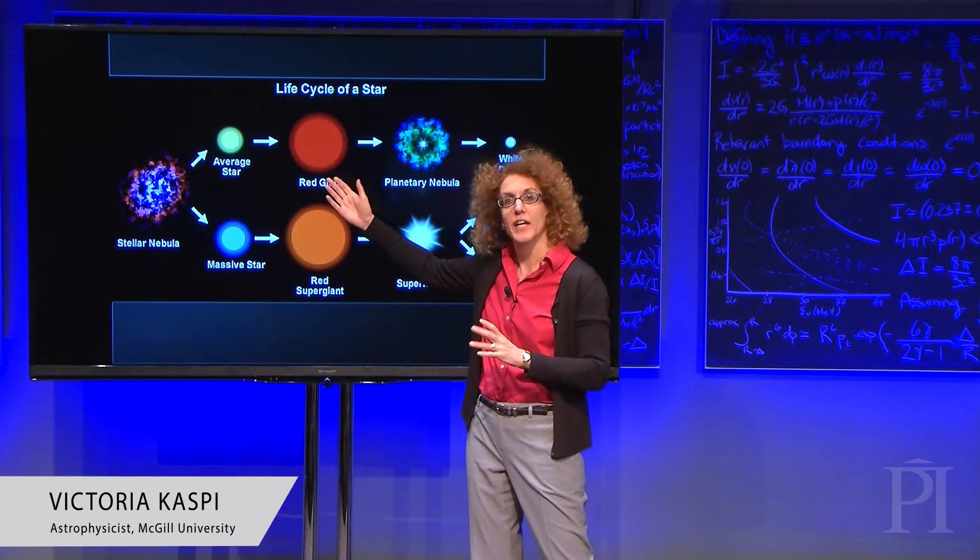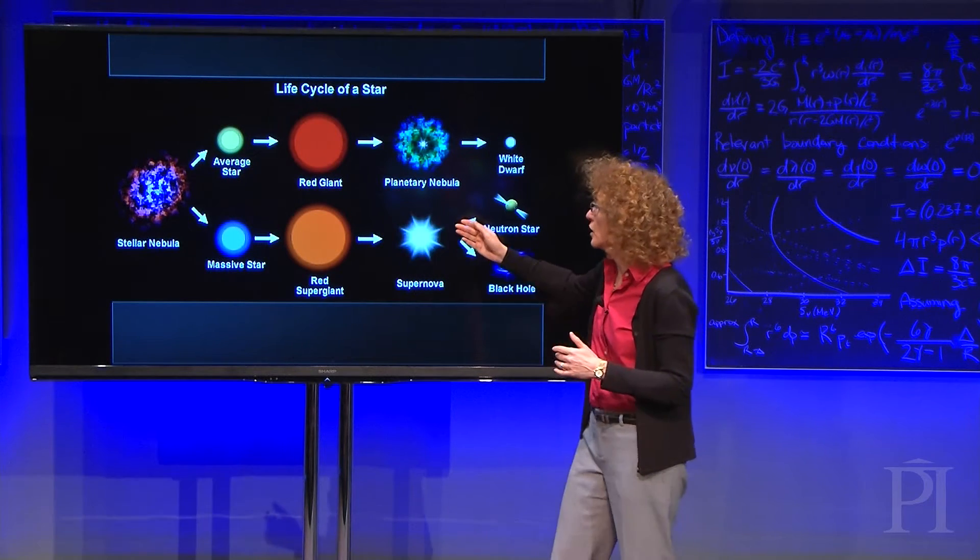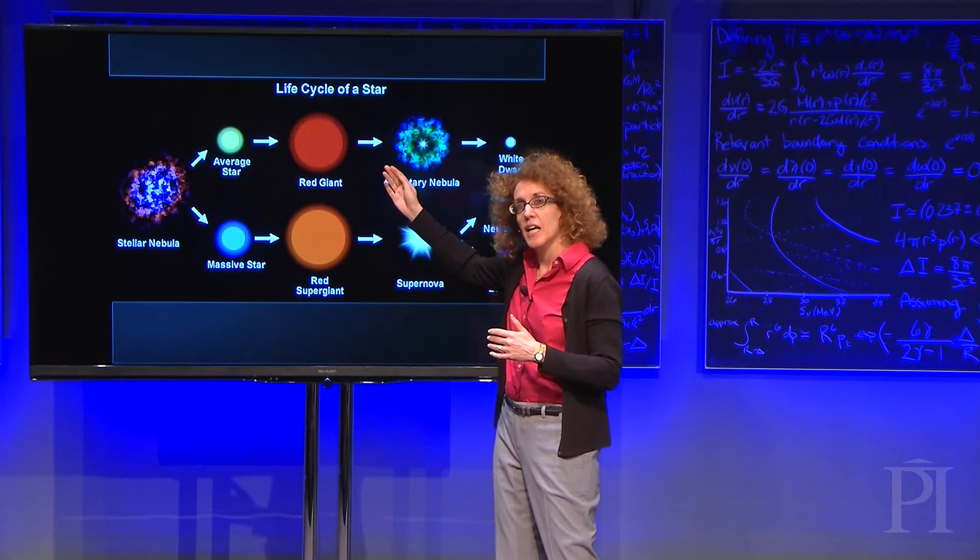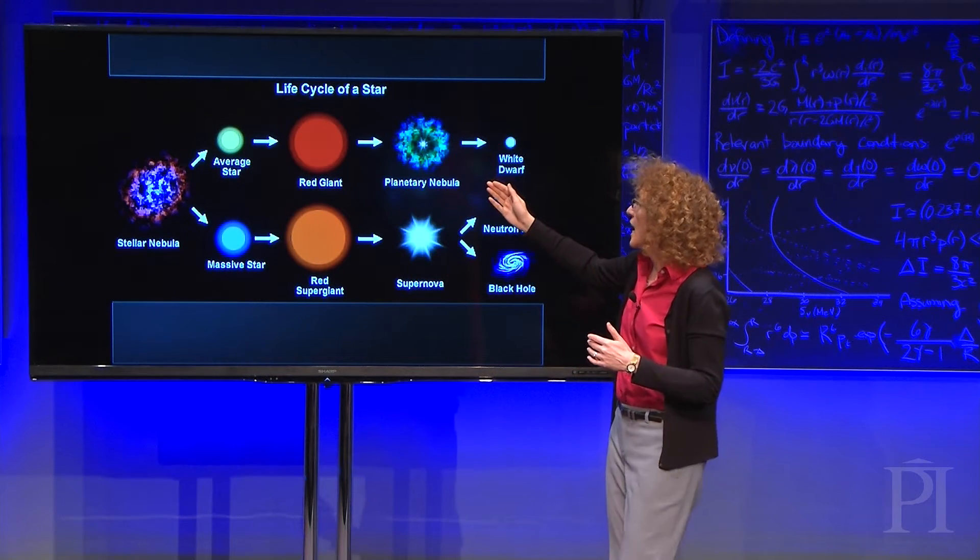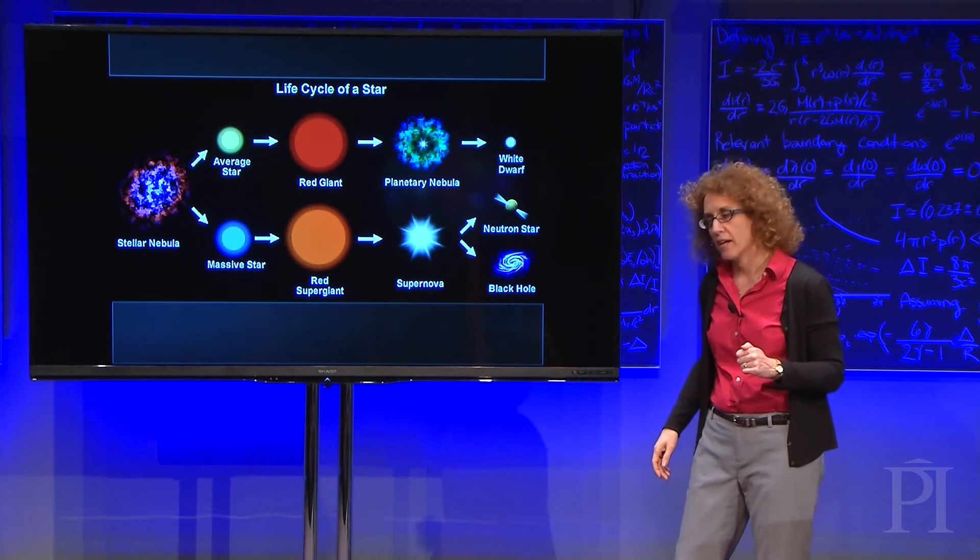An average star, a low-mass star like our Sun, over the course of its lifetime will evolve, eventually growing into a red giant, expelling its outer layers, and then ending up as a white dwarf star. We see lots of white dwarfs around our galaxy.